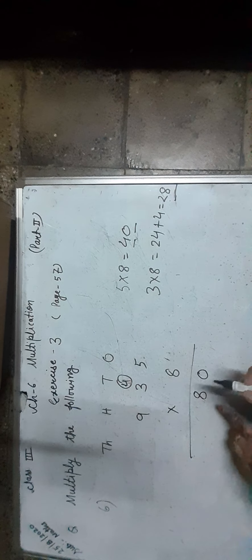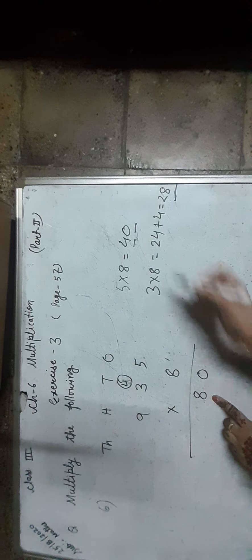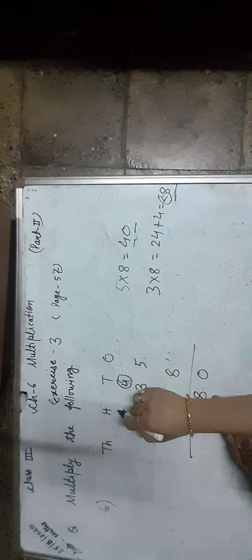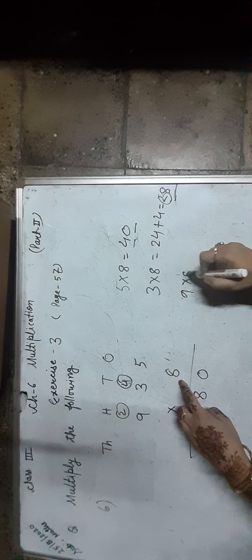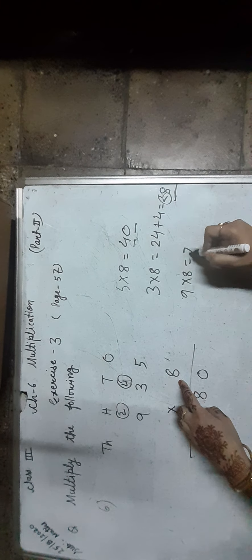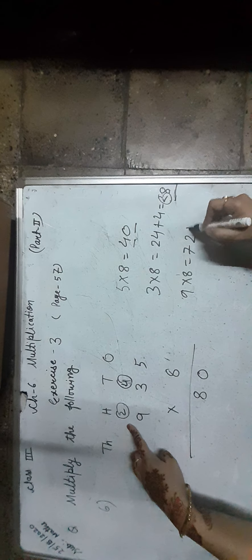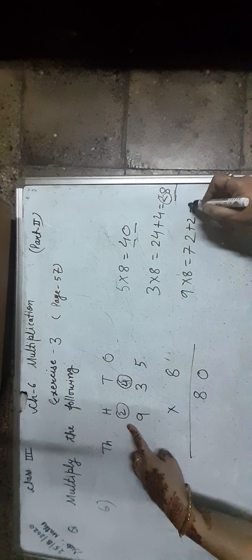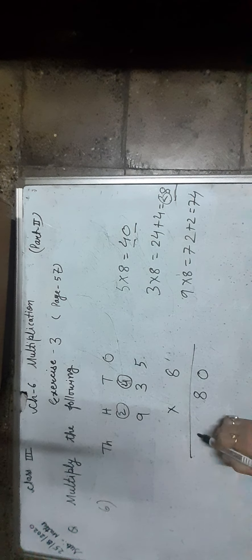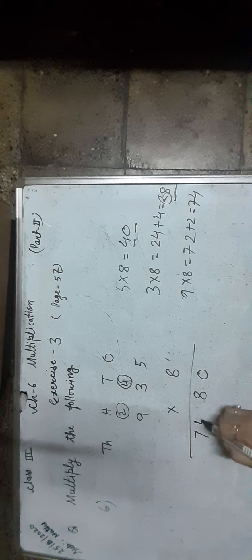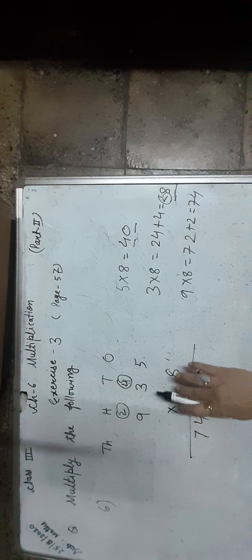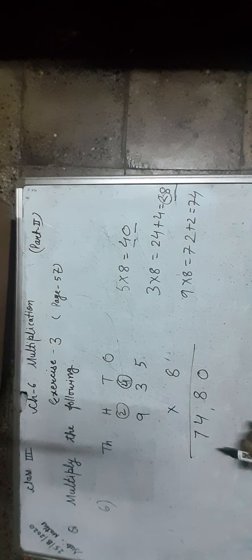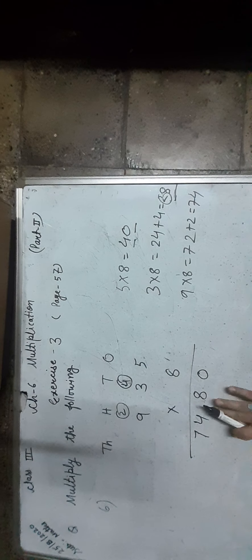28 means 8 tens and 2 hundreds. We write 8 in the 10s place and carry 2 to the 100s place. Now, 9 × 8 is equal to 72, plus 2 carry over, equals 74. We write 74 at last. The product of 935 and 8 is 7,480.